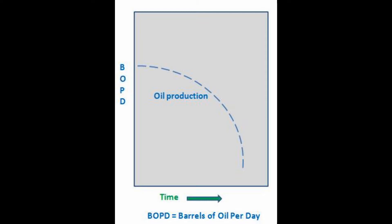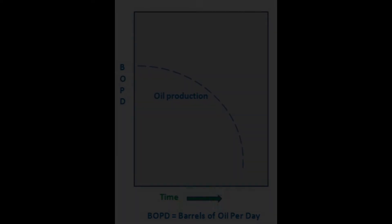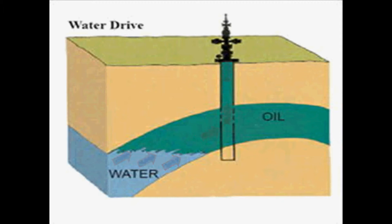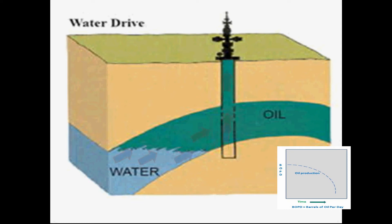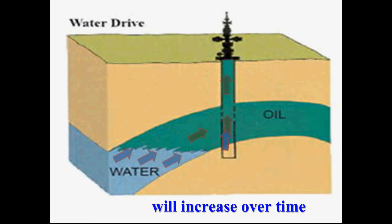Oil production holds steady at the beginning because pressure is maintained by the water pressure. Water production can start at any point and will displace some of the oil being produced. This water production will continue to increase as time goes by.